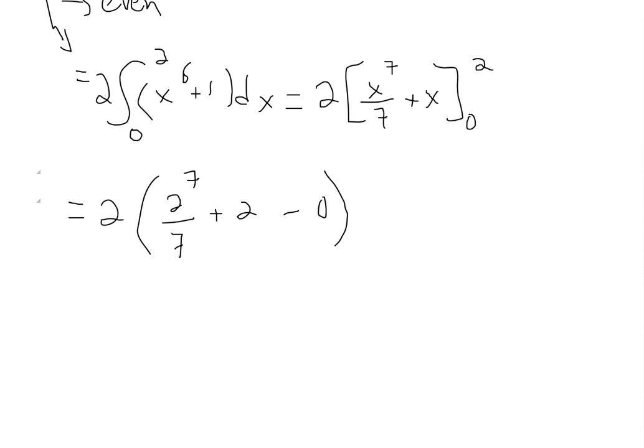So now we have this. We could solve this further. If you plug this into a calculator, 2 to the power of 7 is 128. So we'll get 2 times 128 divided by 7, and I'll just write this as a denominator of 7, plus 14 over 7. 14 divided by 7 is just 2, so that's the same thing.